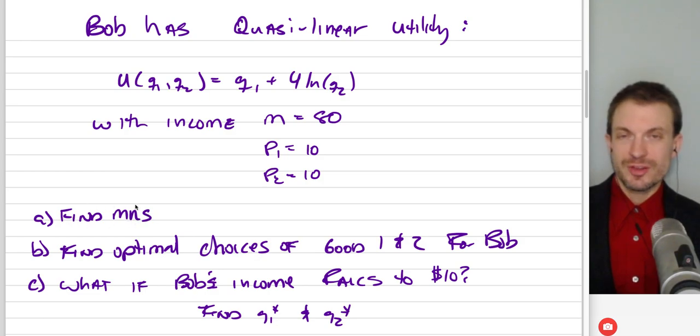We want to find the marginal rate of substitution, MRS. We want to find the optimal choices of good one and good two for Bob. And then we want to figure out what happens if Bob's income falls to $10, that would only allow Bob to consume one unit of good one or one unit of good two. So we want to find the optimal Q1 and Q2.